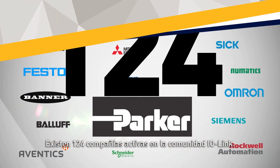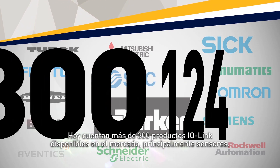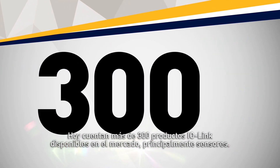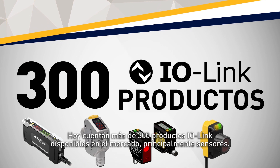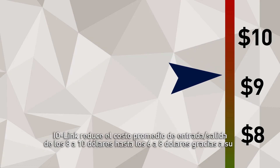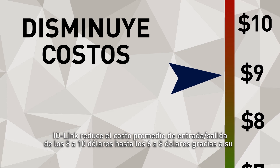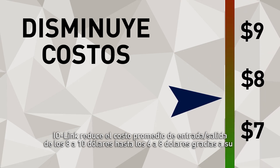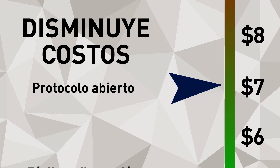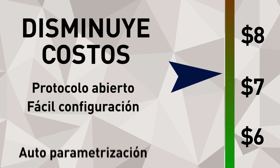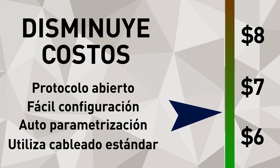There are 124 companies active in the IO-Link community, and over 300 IO-Link products available in the market today, primarily sensors. IO-Link reduces the average I/O cost point from eight to ten dollars down to six to eight dollars via its open protocol, ease of configuration, self-parameterization, and the use of standard cabling.